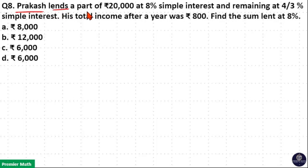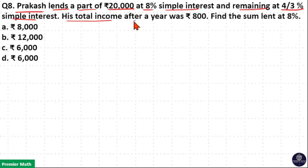Rakesh lends a part of 20,000 rupees at 8% interest and the remaining at 4/3% interest. His total income after a year was 800 rupees. Find the sum lent at 8%.